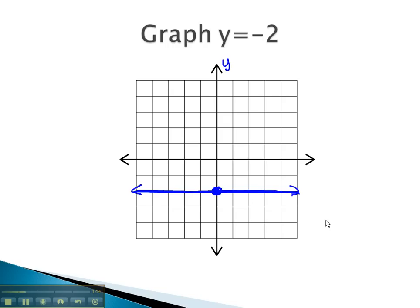This is the line y equals negative 2, because at every point on the graph, whatever x is, y will always be negative 2.